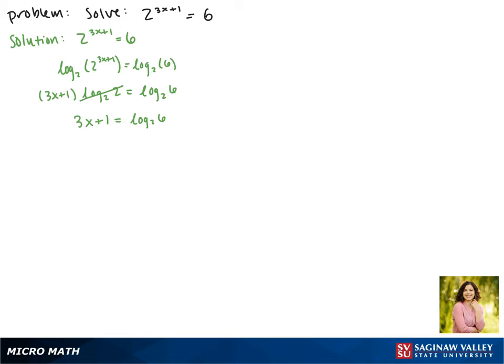Solving for x, first we'll subtract 1 from each side. This gives us 3x equals negative 1 plus the log base 2 of 6. Dividing both sides by 3 gives us x equals negative 1 plus the log base 2 of 6 all over 3.